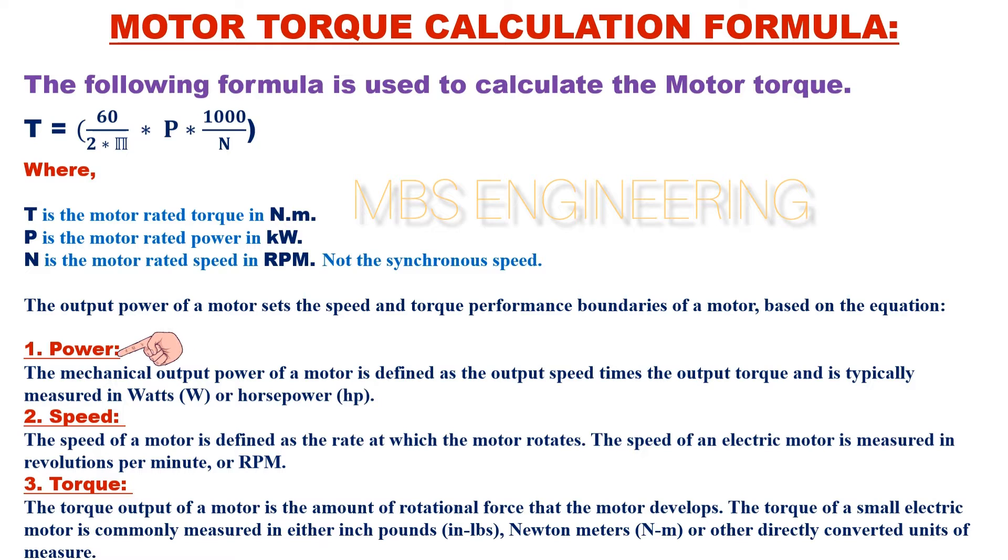First, we understand what you mean by power. The mechanical output power of a motor is defined as the output speed times the output torque and is typically measured in watts (W) or horsepower (hp).